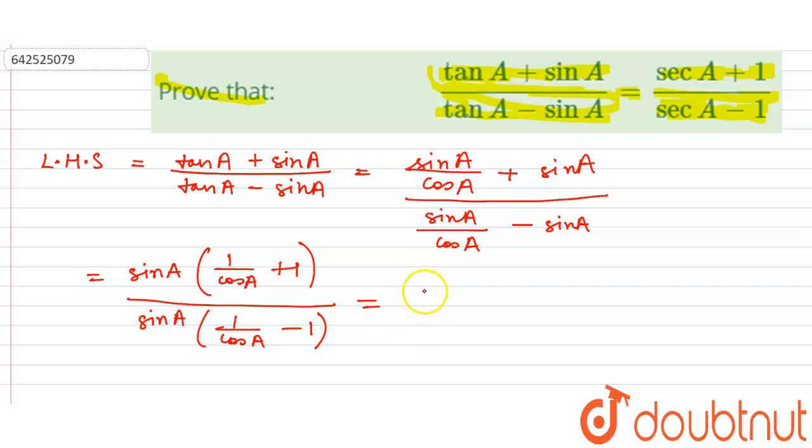Now the sin A gets cancelled out and we are left with 1 by cos A plus 1 over 1 by cos A minus 1.